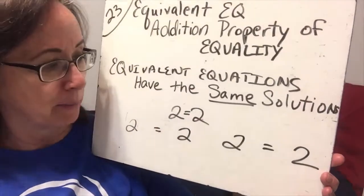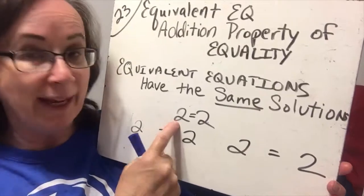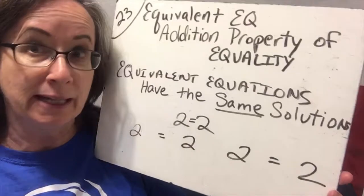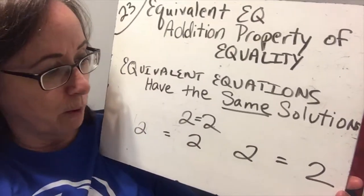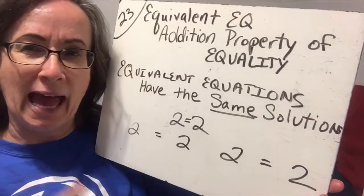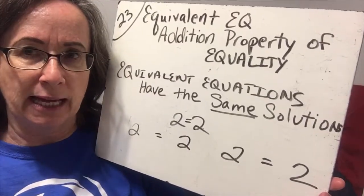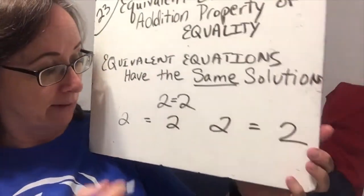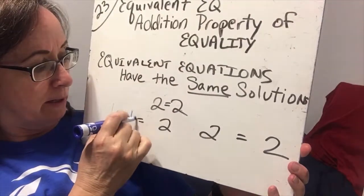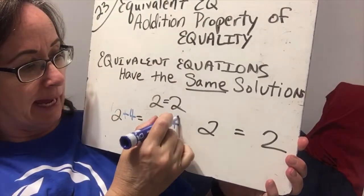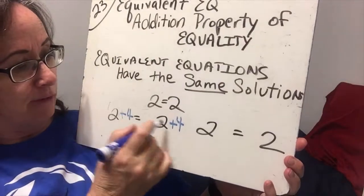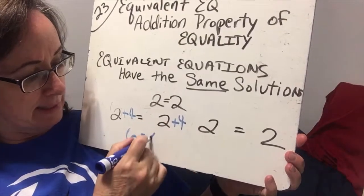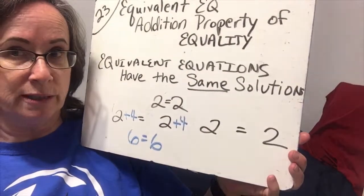Let's start with an example. We know that 2 equals 2, and when we have one side equal to the other side with an equal sign in between, it is an equation. So what we're going to do is add the same thing to both sides. I'm going to add a 4 to each side of the equation. So 2 plus 4 is 6, and 2 plus 4 is 6. And I have a true statement again.